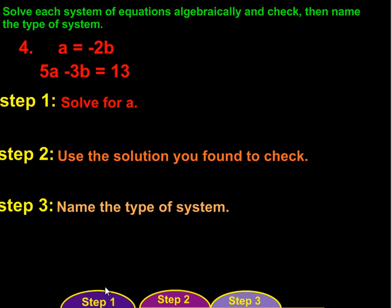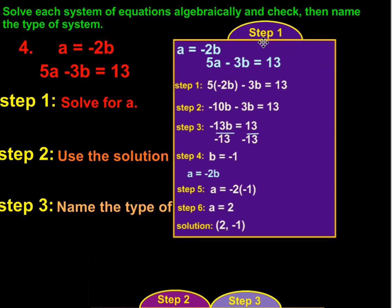So, we'll start by trying to solve for a. If we take the equation, and we know that a is negative 2 times b, so in place of a, we put negative 2b. That gives us 5 times negative 2b minus 3b equals 13. Well, 5 times negative 2 is going to give us negative 10b minus 3b equals 13. So, we have negative 10b minus 3b gives us negative 13b equals 13.